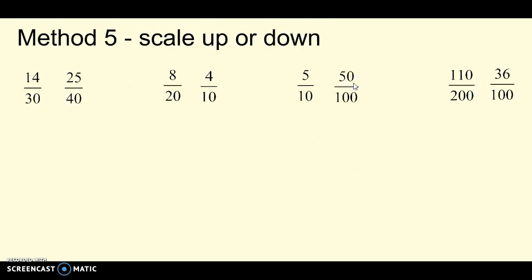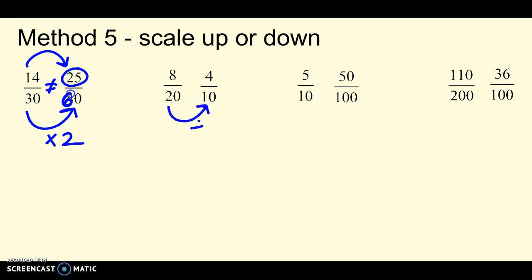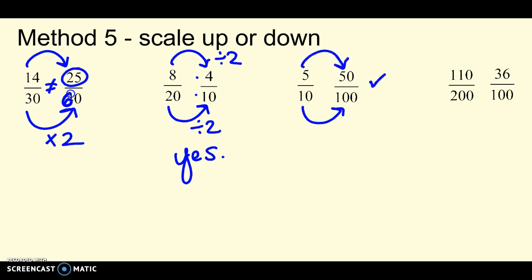Method 5 is a fun one — scaling up and scaling it down using arrows. For the first example, I can tell just by looking that one number got multiplied by 2. So I need to check: did the other number also get multiplied by 2? No — it would have to be 28 for that to be true. So not equal. Or here, this got divided by 2, and so did this — if the arrows match and the same thing happened on top as on the bottom, then yes, those are equal fractions. Or this got multiplied by 10 and that got multiplied by 10 — yes, they're equivalent. But here, this got divided by 2; did this also get divided by 2? No. If the arrows aren't the same for numerators and denominators, the answer is no, not proportional.